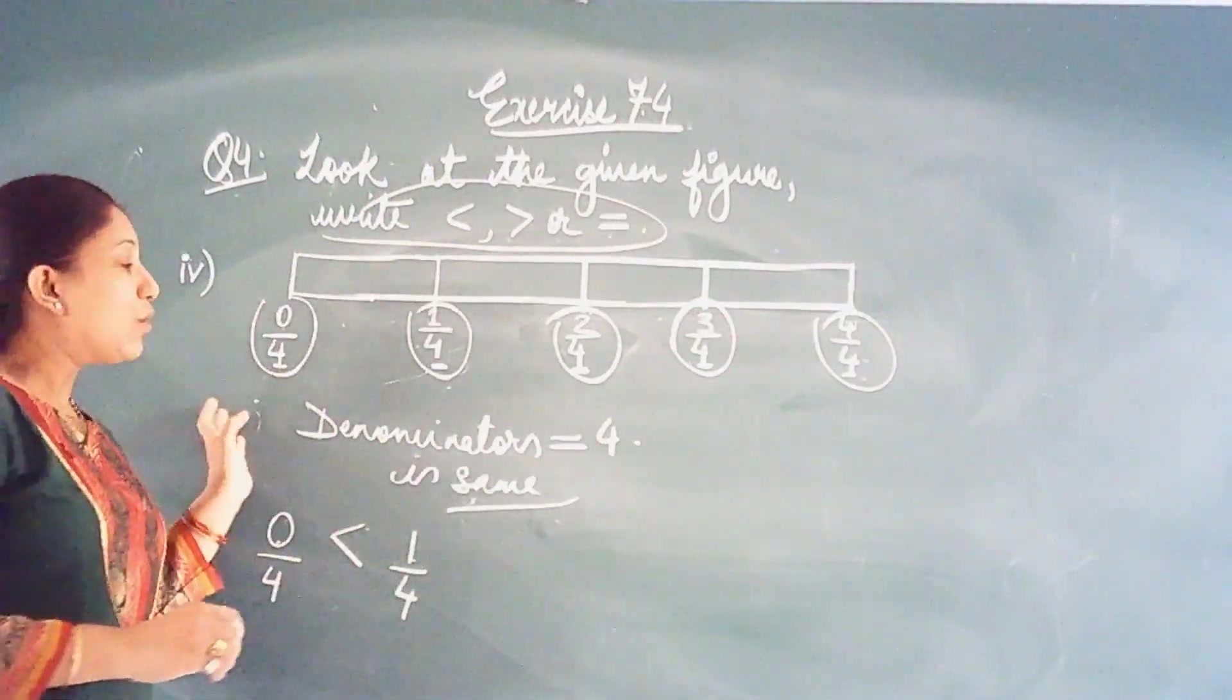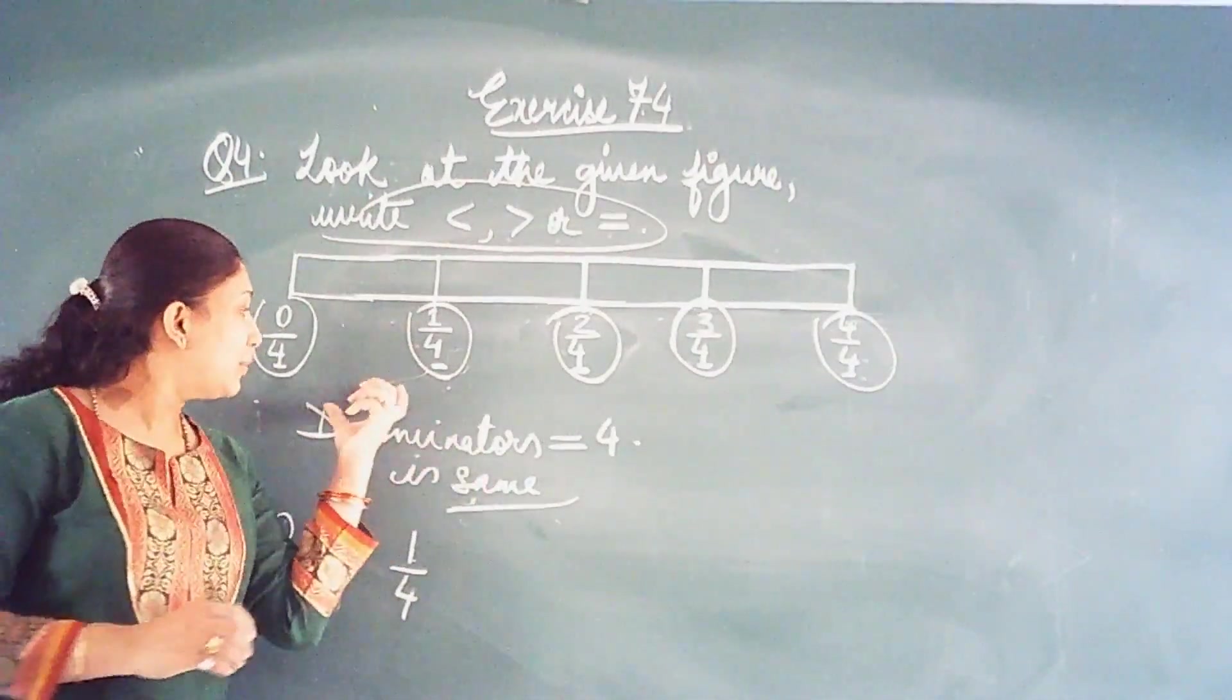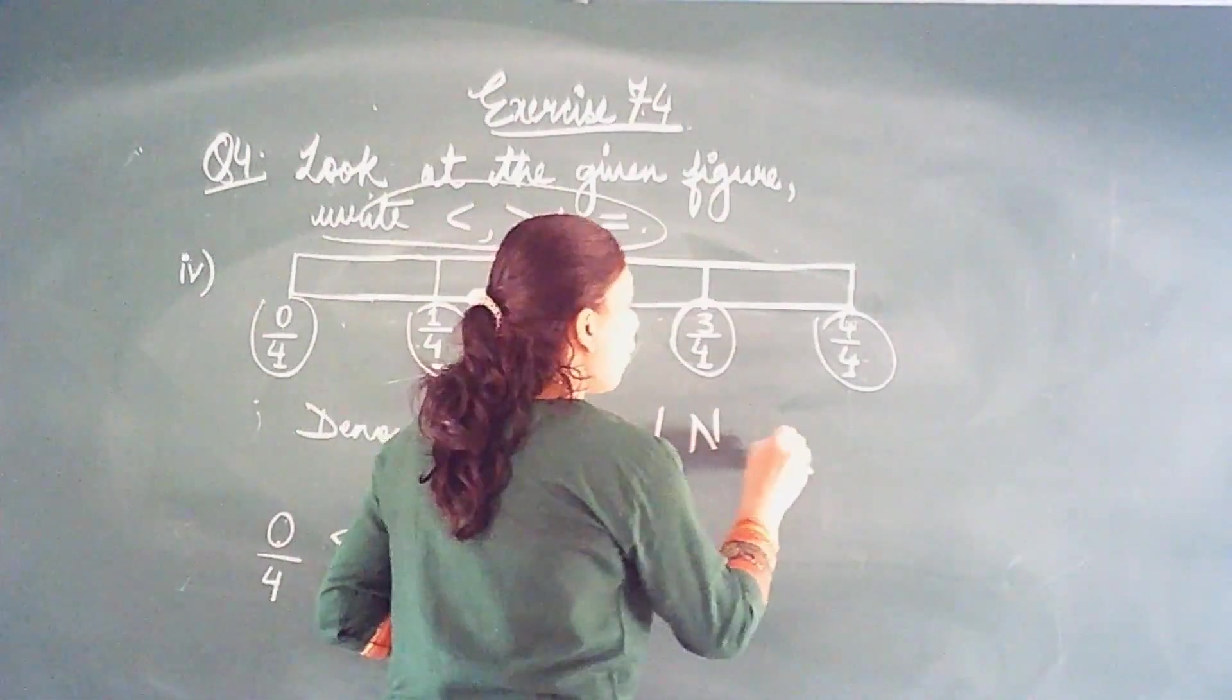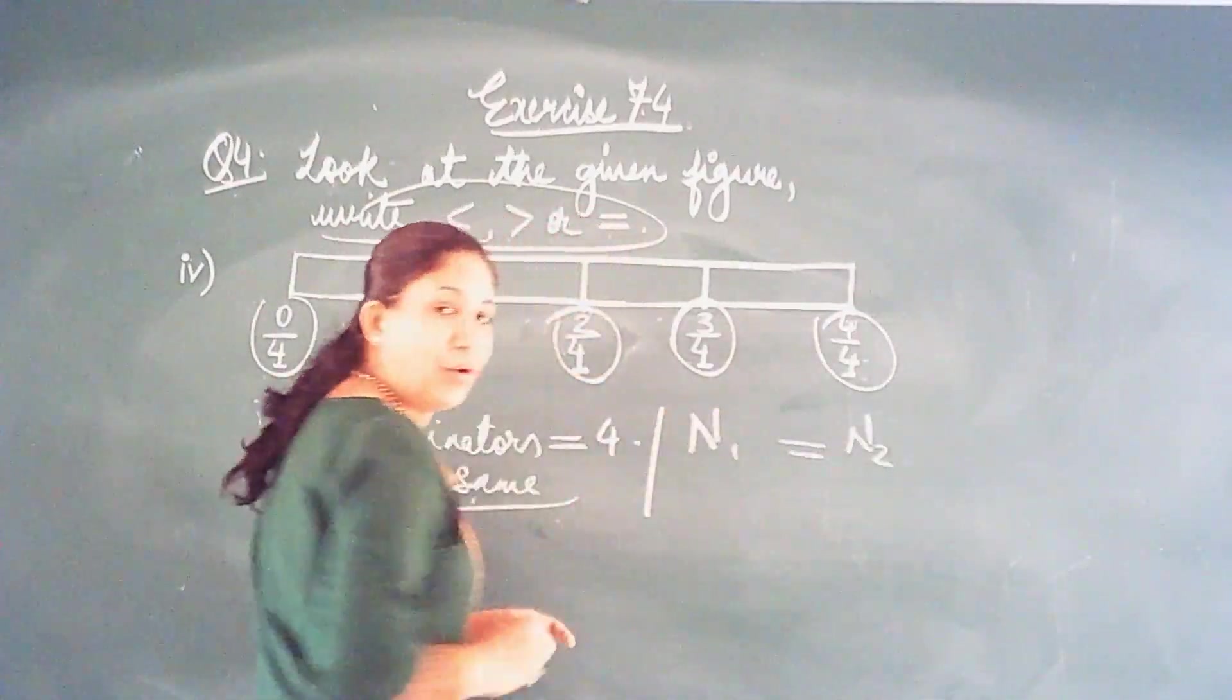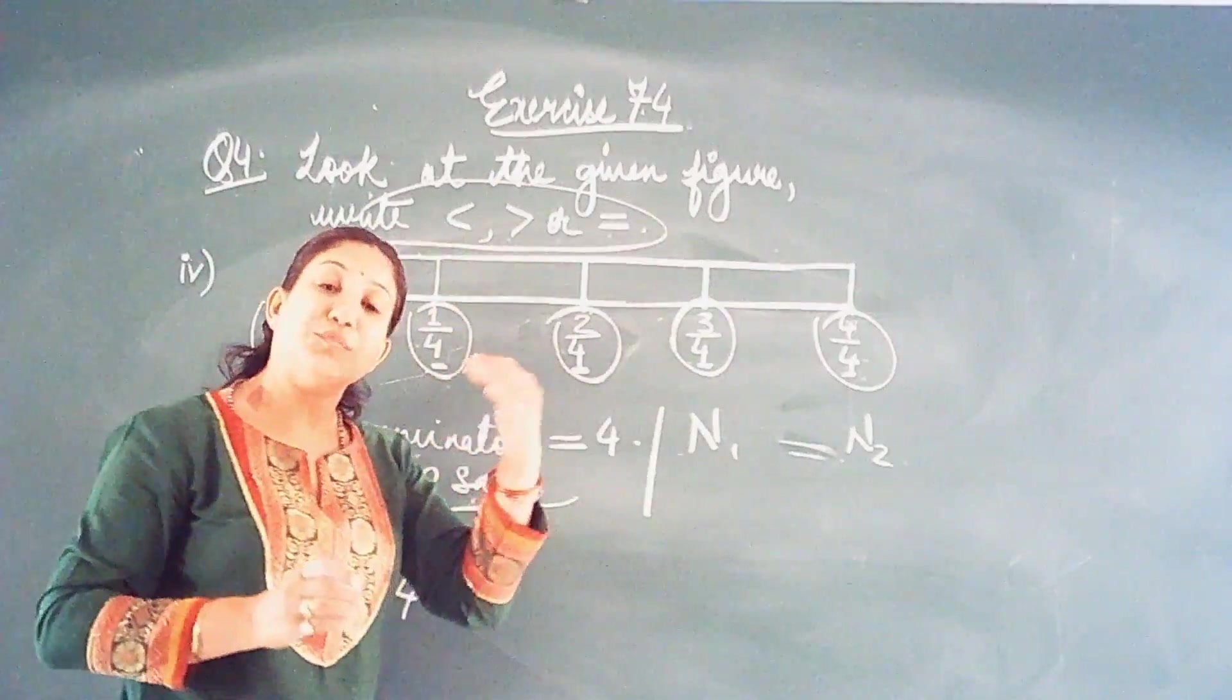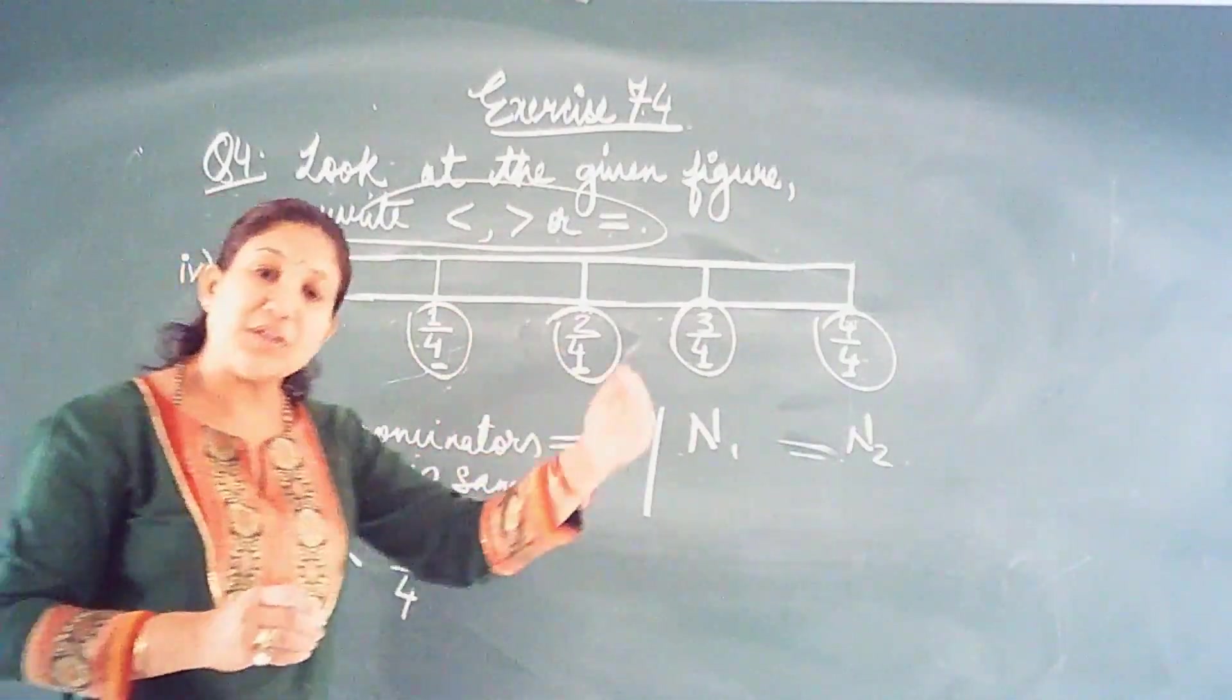Understood? Why? Because we know that when the denominators are same, we check the numerator of the given fractions. And when you check whichever numerator is smaller, that fraction becomes smaller.